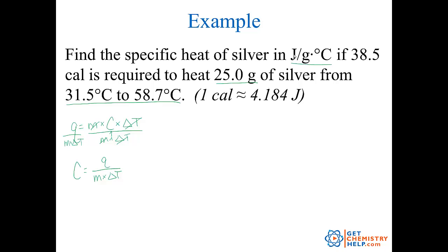So it tells me it wants the units to be in joules per gram degree Celsius. And I have calories, grams degree Celsius. So I need to convert these 38.5 calories into joules. So let's do that first. So Q, 38.5 calories. I want to turn that into joules. And it told me right here that one calorie was 4.184 joules. So one calorie, 4.184 joules. So calories cancels. So I put that in my calculator and it gives me 161.084 joules.